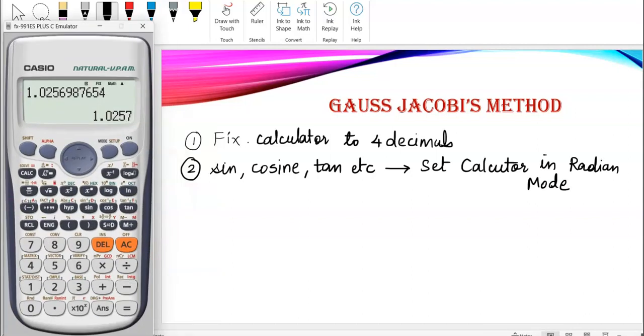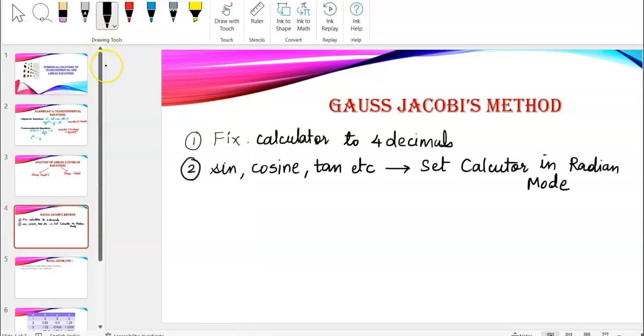Let me show you again here. I go to shift mode. You'll have option number 4 here as radian. And just on the screen, there is an R which is visible there. And that part tells me that my calculator is in radian mode. So, that is the second thing.